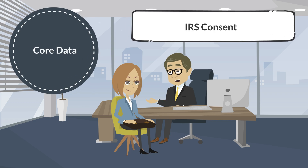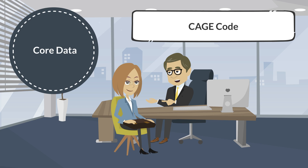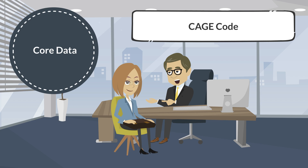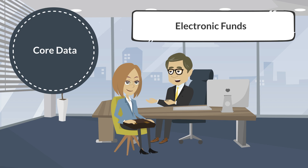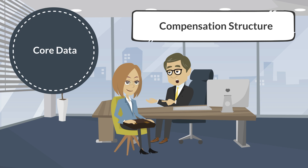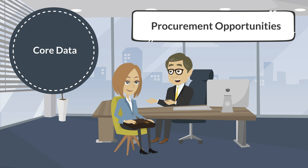An IRS consent form is also required. If your entity has a CAGE code, you will include it. If your entity does not have a CAGE code, one will be assigned after submitting your registration. You will include financial information regarding your entity's ability to accept credit cards, utilize electronic funds transfers, and remittance address. The last two sections of core data include questions relating to your entity's compensation structure and your entity's purpose and history with federal grant or procurement opportunities.